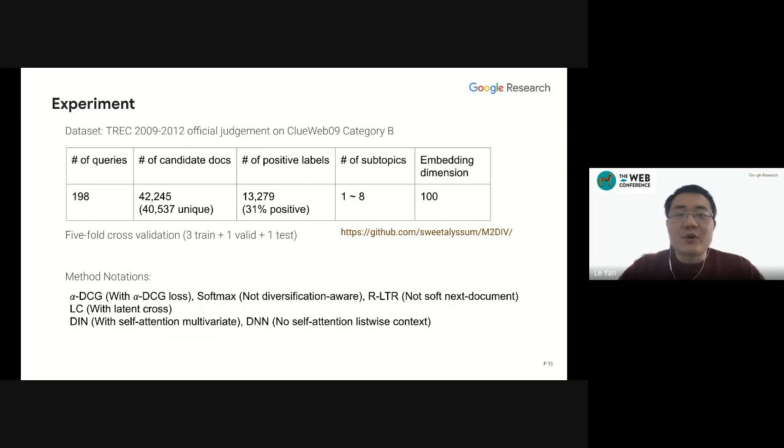We test this framework on the TREC diversity task, which is based on the ClueWeb dataset. We have about 200 queries in total, and we do five-fold cross-validation with three-fold training, one-fold validation, and one-fold for test. All the results shown are on the test set. Besides the implicit baseline methods we have mentioned before, we will also include our results with some ablation studies.